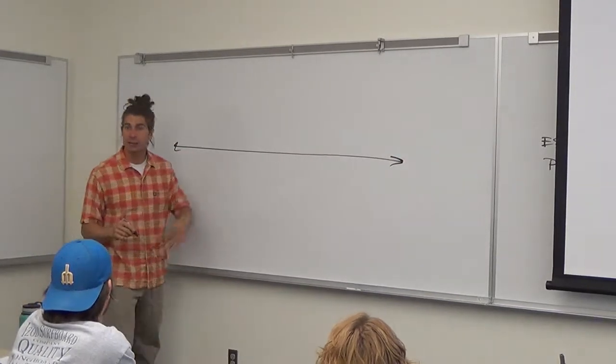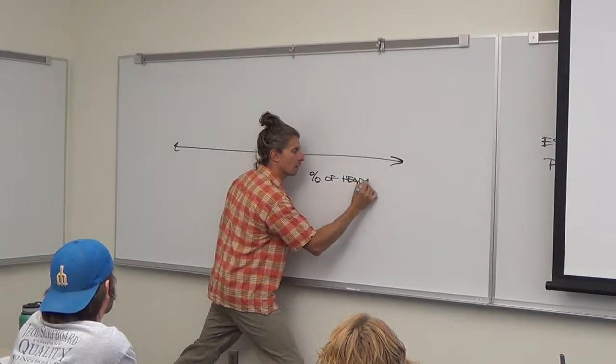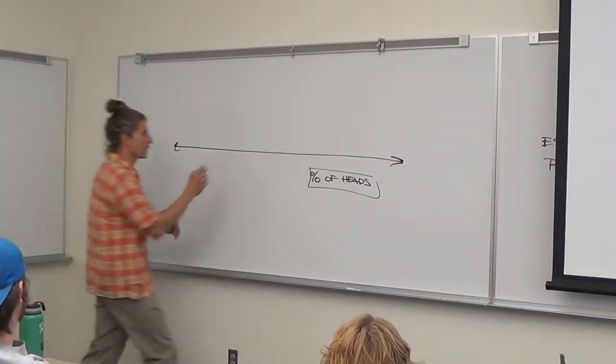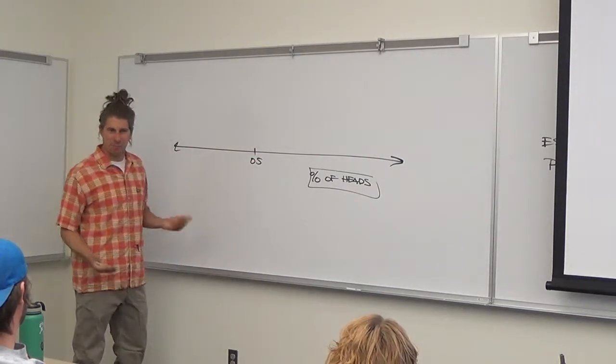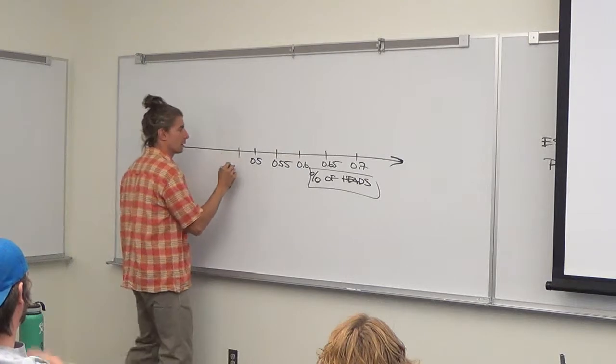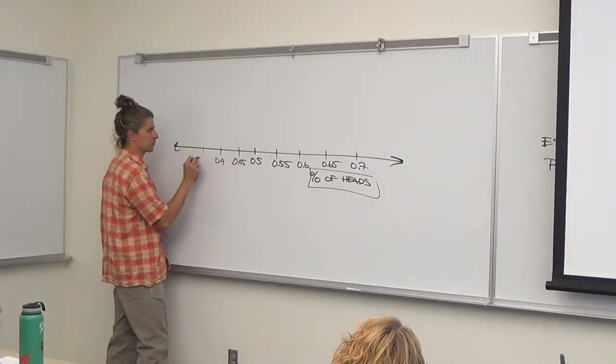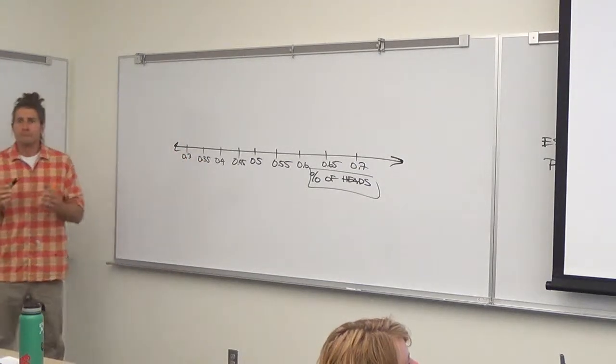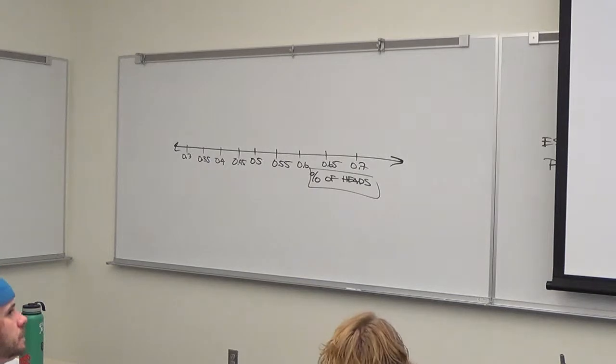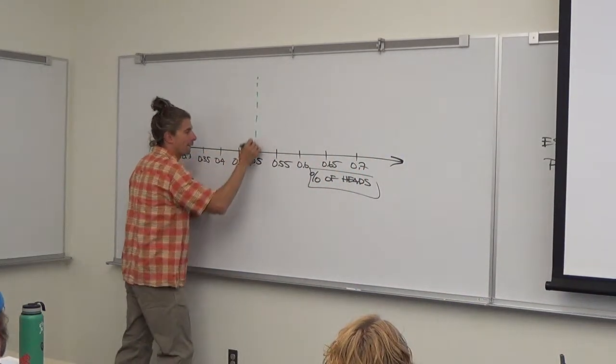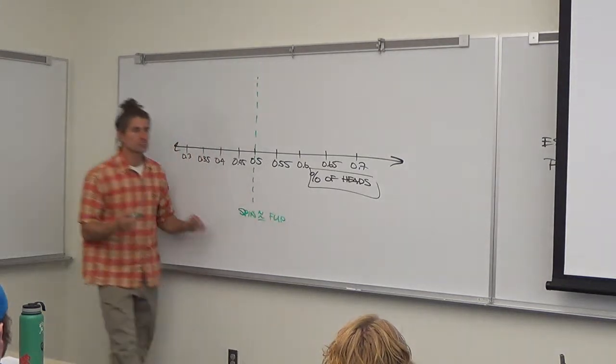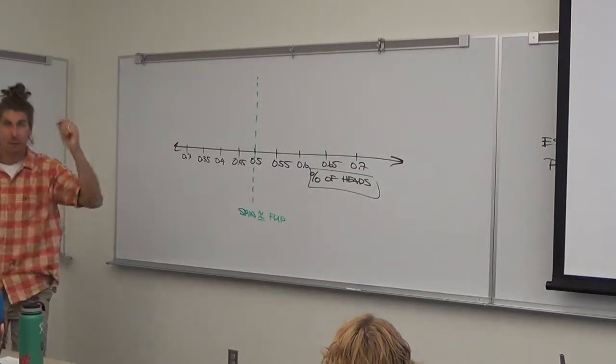Let's draw a number line. I think this is a good way of visualizing a confidence interval. Here's percentage of points on the number line. Now, we have already hypothesized that it's 50%, one half. I'll put that in the middle, .5. And then we'll go out maybe by 5% increments, .55, .6, .65, .7. Then we'll go down, .45, .4, so forth and so on.